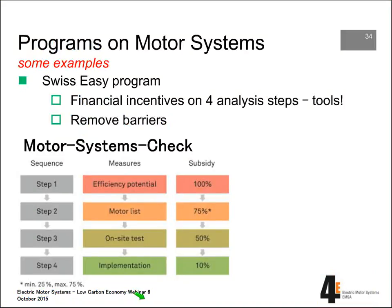The Swiss EZ program is an incentive program on motor systems consisting of four consecutive steps, each with a subsidy in place. It targets removing barriers with end users in order to get them to the point of implementing efficient motor systems. The subsidy adds up to at least the cost of the analysis.